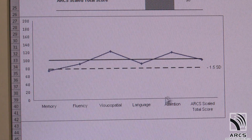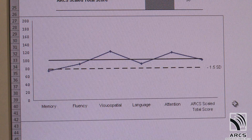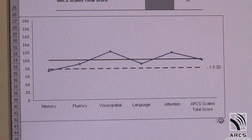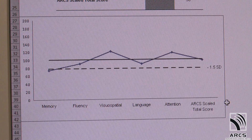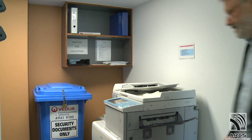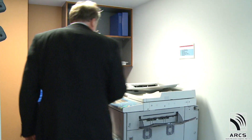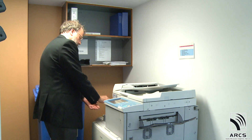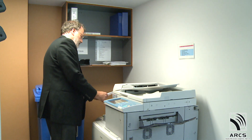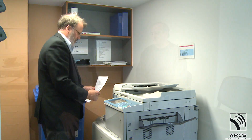The dotted line represents the mean minus 1.5 standard deviation level. The summary sheet can be printed for inclusion in patient files, and can be useful when giving individuals feedback on their performance on the ARCS.